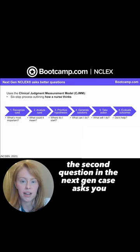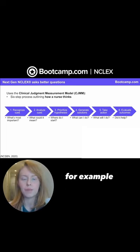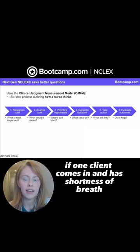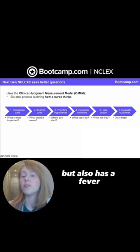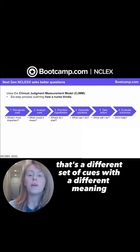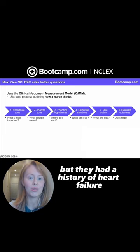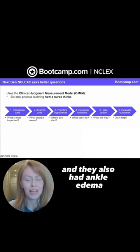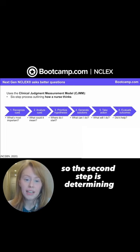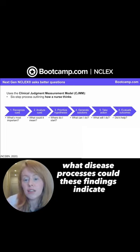The second question in a NextGen case asks: now what could this mean? Take shortness of breath, for example. If a client has shortness of breath along with a fever and yellow-green sputum, that's a different set of cues with a different meaning than if a client had shortness of breath with a history of heart failure and ankle edema. So the second step is determining what could these cues mean — what disease processes could these findings indicate?